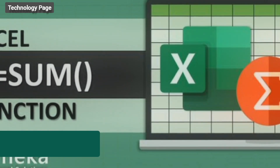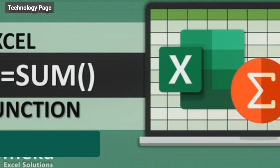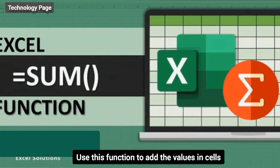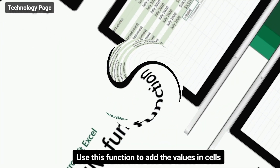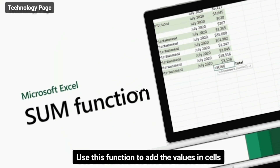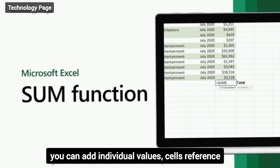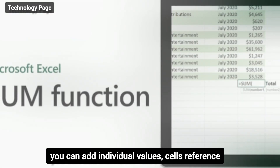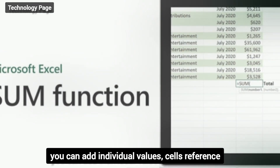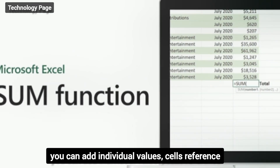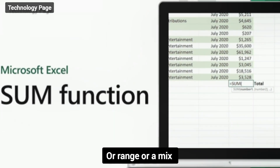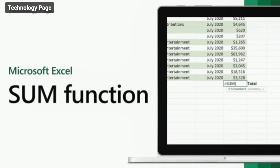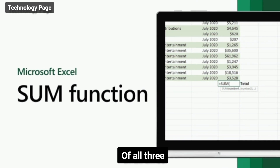First one: the SUM function. Use this function to add the values in cells. You can add individual values, cell references, a range, or a mix of all three.